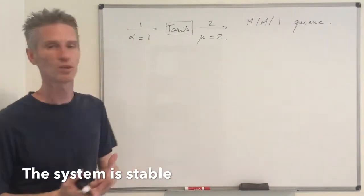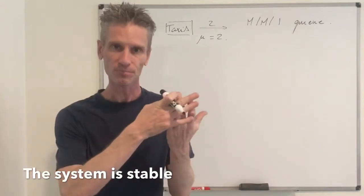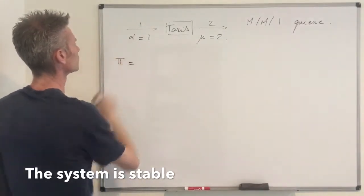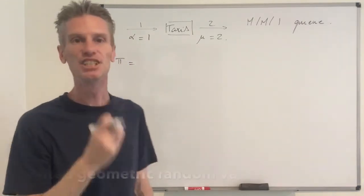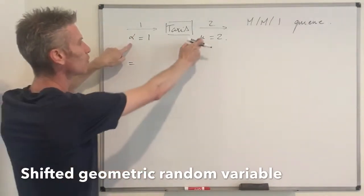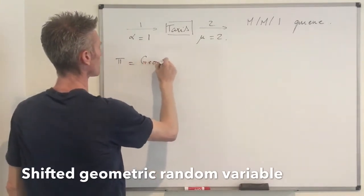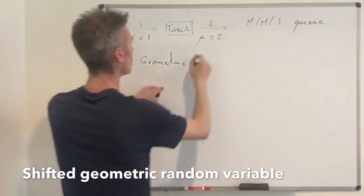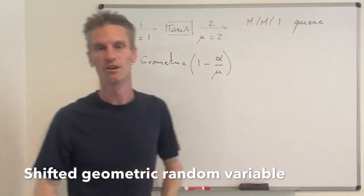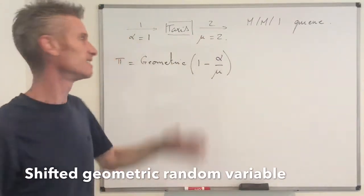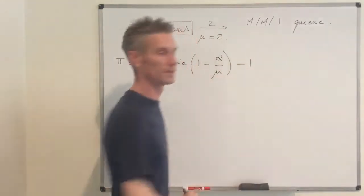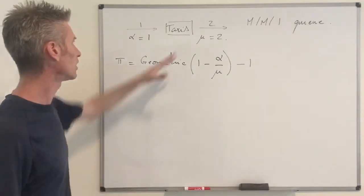The process X(T) that keeps track of the number of taxis in the taxi station is positive recurrent and irreducible. We know from the previous video that the stationary distribution pi is given by a shifted geometric random variable with parameter one minus alpha over mu. So pi is geometric with parameter one minus alpha over mu. Since a geometric random variable starts from one but there may be zero taxis in the station, we need the shifted geometric random variable — so we subtract one. That gives us the stationary distribution of our system.